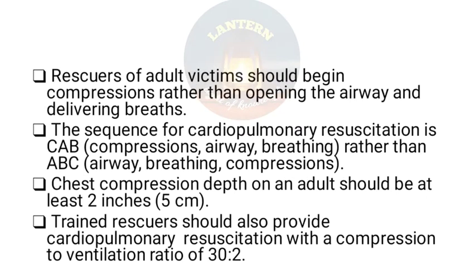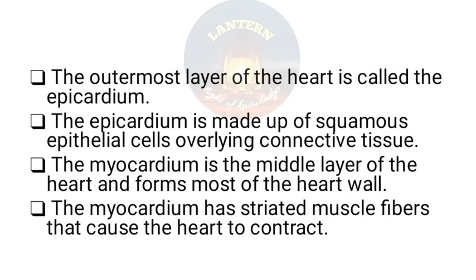Rescuers of adult victims should begin compressions rather than opening the airway and delivering breaths. The sequence of CPR is CAB — compressions, airway, breathing — rather than ABC. Chest compression depth on an adult should be at least two inches (5 cm). The compression-to-ventilation ratio is 30:2.